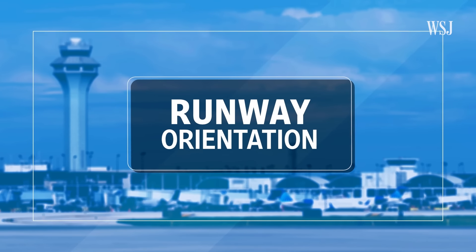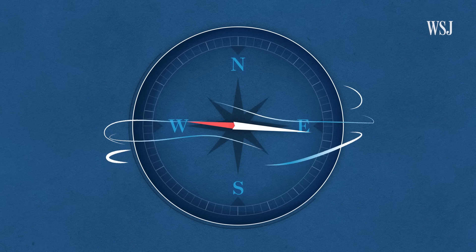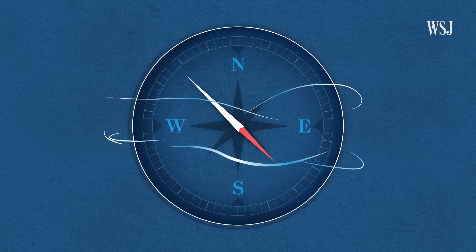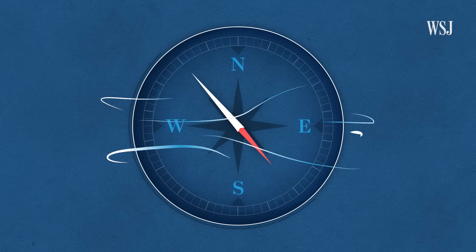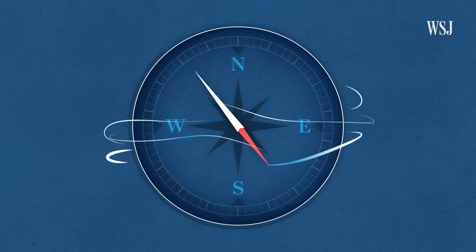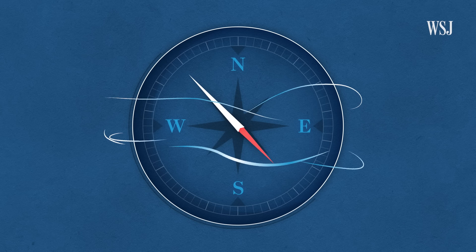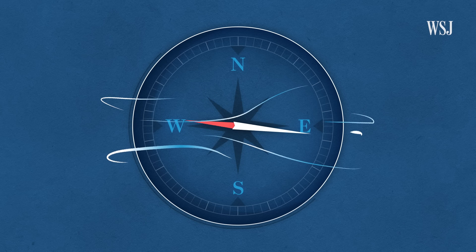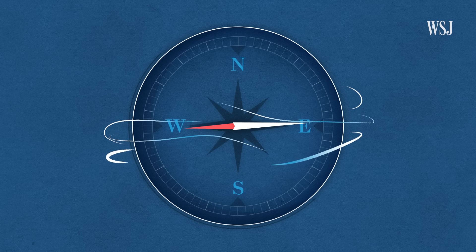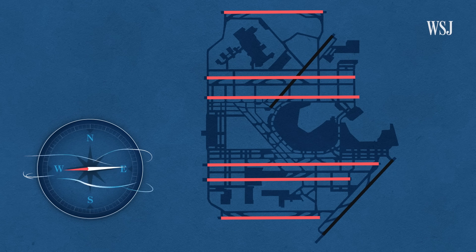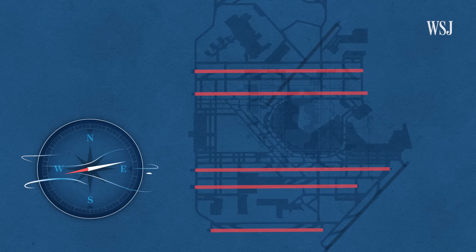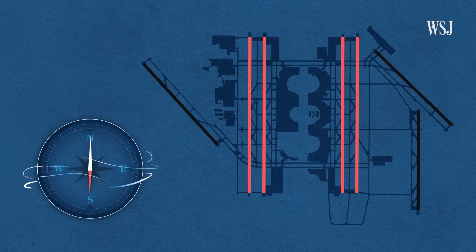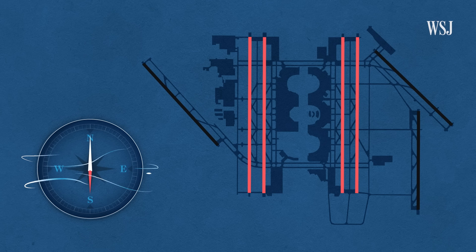Runway orientation pertains to how the runways are situated relative to compass headings — whether north-south, east-west, northeast-southwest, or northwest-southeast. The direction of the runway is determined by the wind. In Chicago, the predominant direction of wind is either westerly or easterly, so having runways on an east-west orientation makes a lot of sense here. If you look at a place like Dallas-Fort Worth, you end up with wind conditions that are predominantly out of the north or the south.